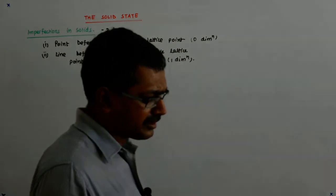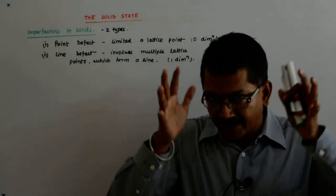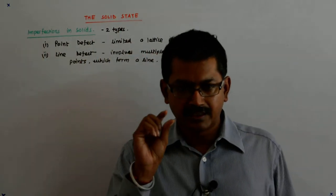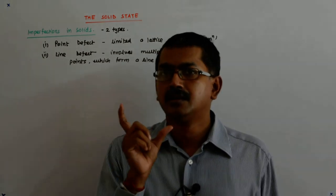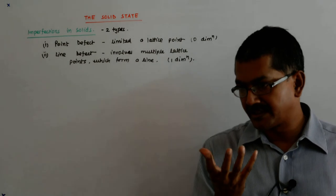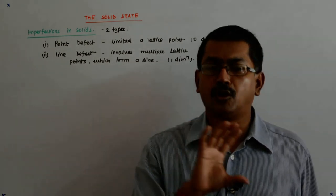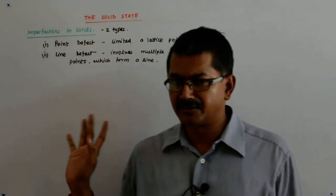In crystalline solids, if there are defects we understand that there will be defect in some small portion. Now that portion could be a point, a line, it could also be an area or it could also be a whole volume, but we are not discussing those.